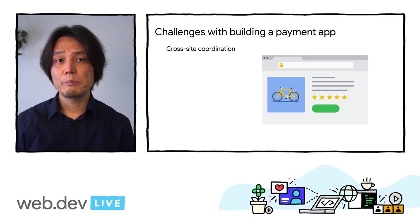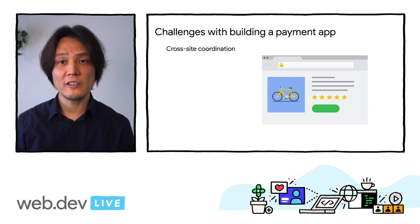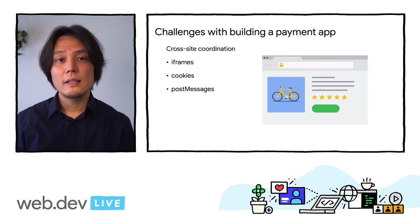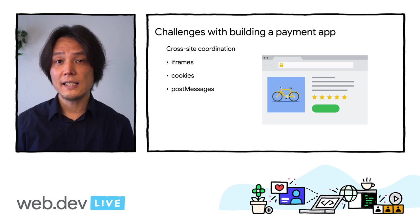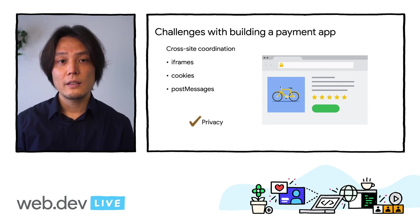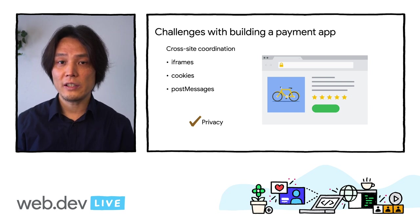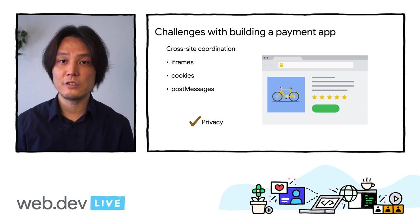For developers, building an equivalent payment flow requires intricate cross-site coordination using iframes, cookies, and post messages. Some of these mechanisms are being phased out by browser vendors as they are also easily abused by trackers that invade users' privacy. The Web Payments APIs provide a consistent and robust alternative for managing such coordinations, and we are working hard to ensure compatibility with the evolving web privacy landscape.